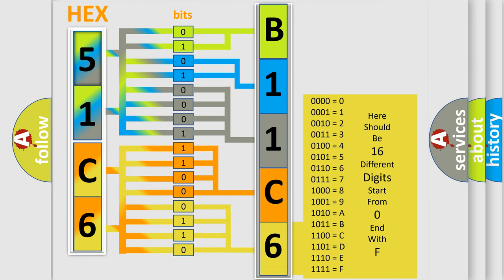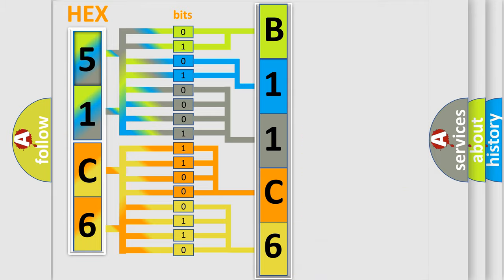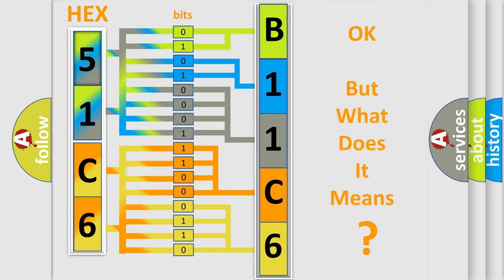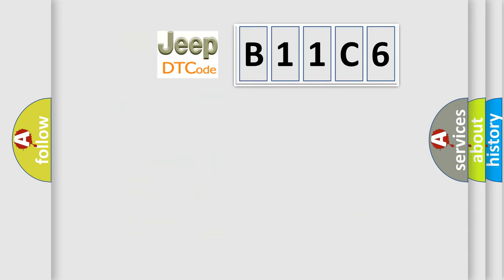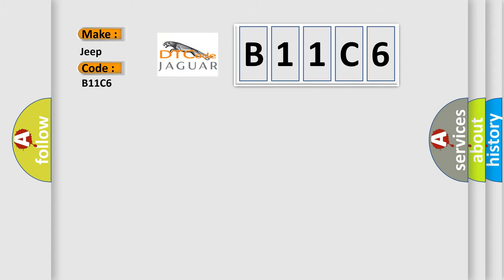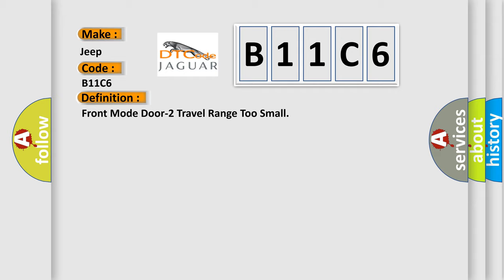We now know how the diagnostic tool translates received information into a more comprehensible format. The number itself does not make sense if we cannot assign information about what it actually expresses. So, what does the diagnostic trouble code B11C6 interpret specifically for Jeep car manufacturers? The basic definition is: Front mode door 2 travel range too small.